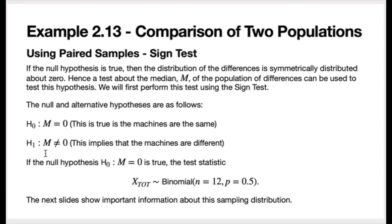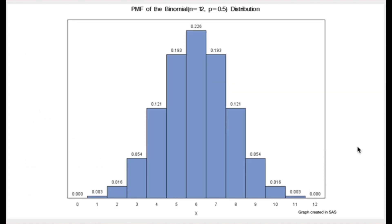The alternative hypothesis is that cap M, the median of the population of differences, is not equal to zero, implying the machines differ in their distribution of defective parts. If the null hypothesis is true, the test statistic X-tote has a binomial distribution with n equal to 12 and p equal to 0.5. The sampling distribution is symmetric about its mean. If the null hypothesis is true, we would expect X-tote to take on values from around 3 to 9 or 2 to 10. Values far away from this region would be evidence against the null hypothesis.